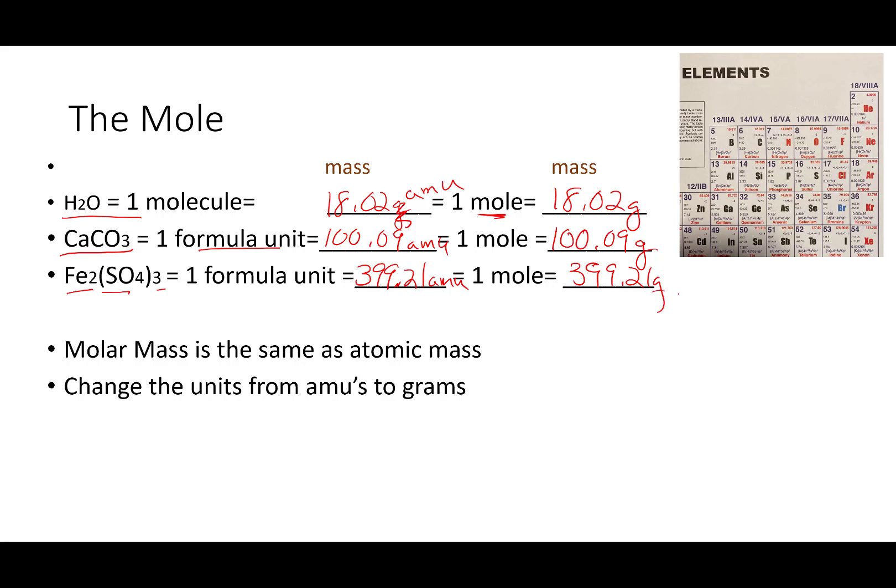Calcium carbonate, also known as chalk, one of those formula units would be 100.09 AMUs, and if you're asking where did this number come from, we found those in that last talk. One mole of those would be 100.09 grams. And iron 3 sulfate, a formula unit of it would be 399.21 AMUs, or a mole 399.21 grams. So I'm hoping you see this relationship. It's the same number, atomic mass as molecular mass, but we're just going to change those units from AMUs to grams when we change the amount of substance we have. And that's what a mole is. It's a representation of amount of substance.